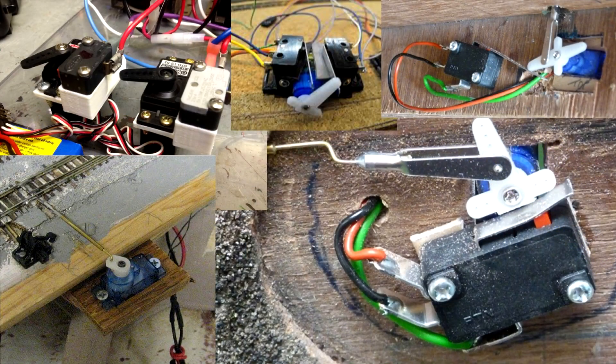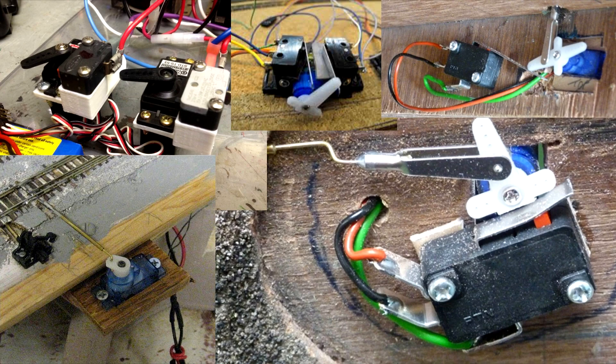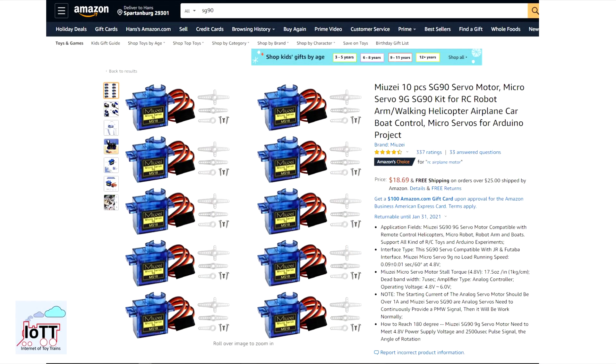A growing number of model railroaders are moving towards using servos to operate switches and semaphore signals. Servos sell for only around $2 per drive and provide excellent control characteristics.